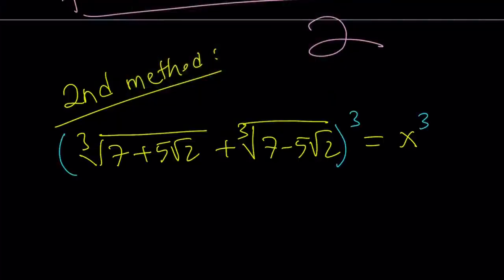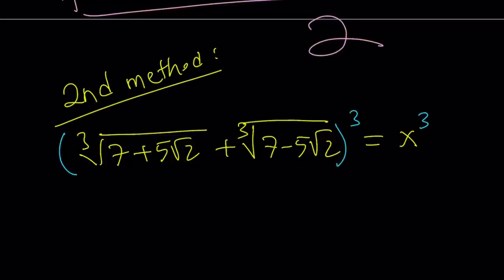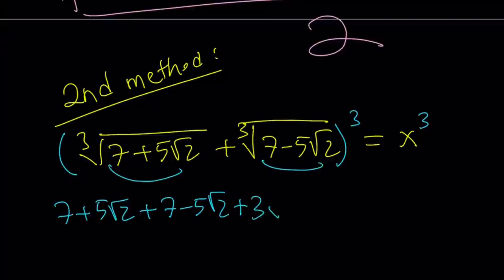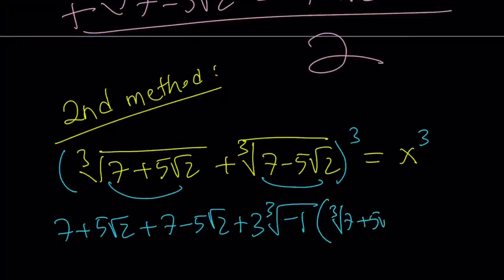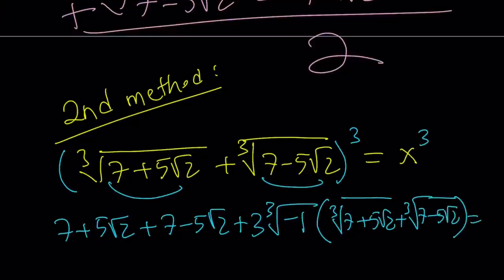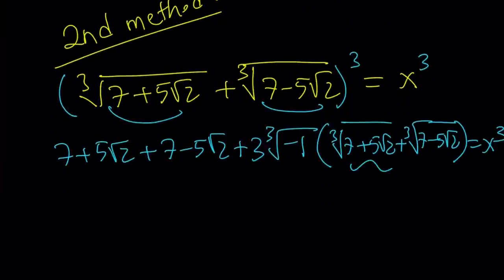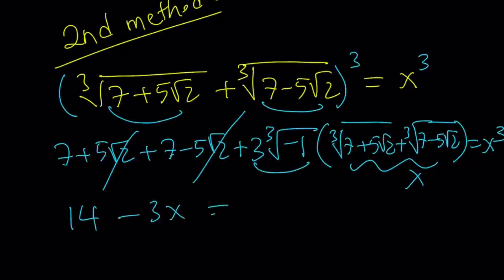That makes sense right? Because we'll get rid of some of the cube roots. Now again I'm going to be using the formula for a plus b quantity cubed. That's going to be the cube of the first term, the cube of the second term, and then plus 3ab three times this times that. Again that is going to be cube root of negative 1 because 49 minus 50, and then that is multiplied by the cube root of 7 plus 5 root 2 plus cube root of 7 minus 5 root 2. And that is going to equal x cubed. But wait a minute, this is equal to x. These two cancel out. 7 plus 7 equals 14. Everything falls apart. That's a negative 3. 14 minus 3x is equal to x cubed.